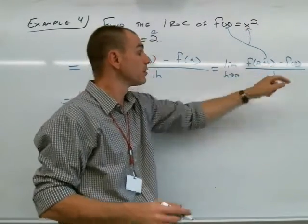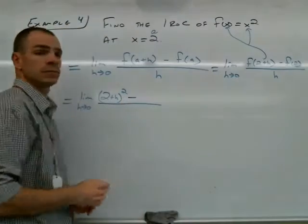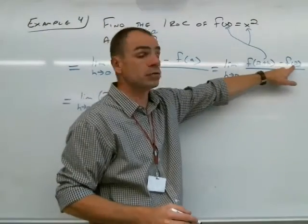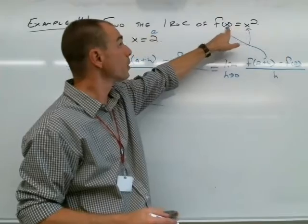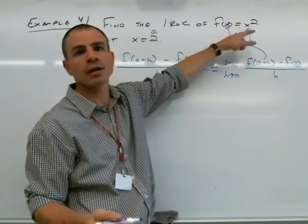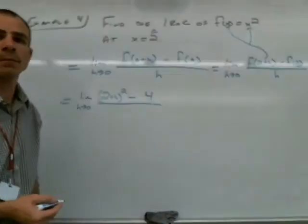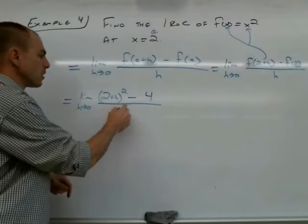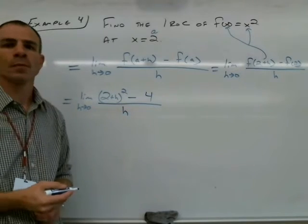When we plug 2 plus h in for x, we get 2 plus h squared, minus—and now we have to plug 2 into the function. We plug 2 in for x, 2 squared, we know that we have a 4 right here. And we have h in our denominator.